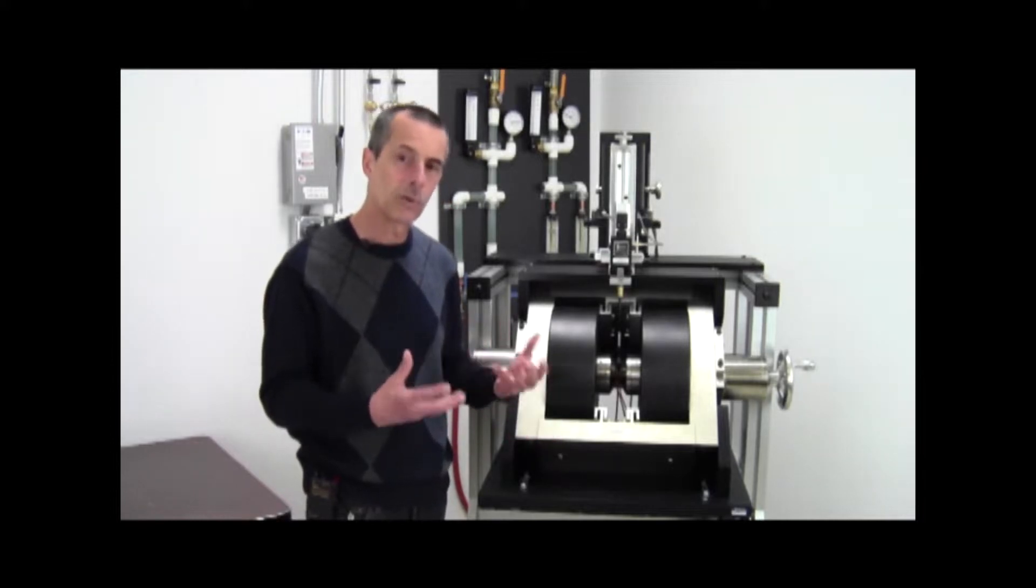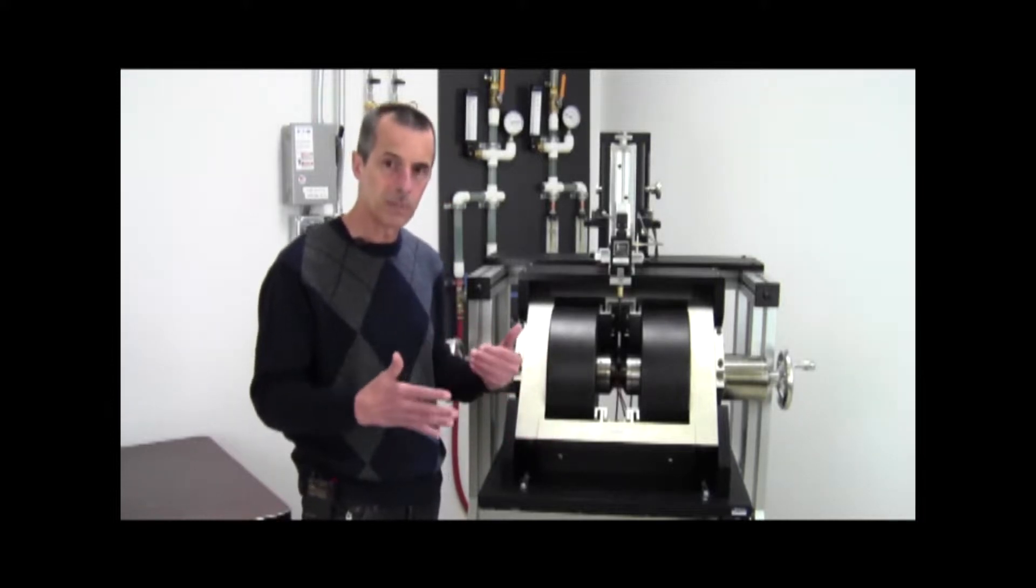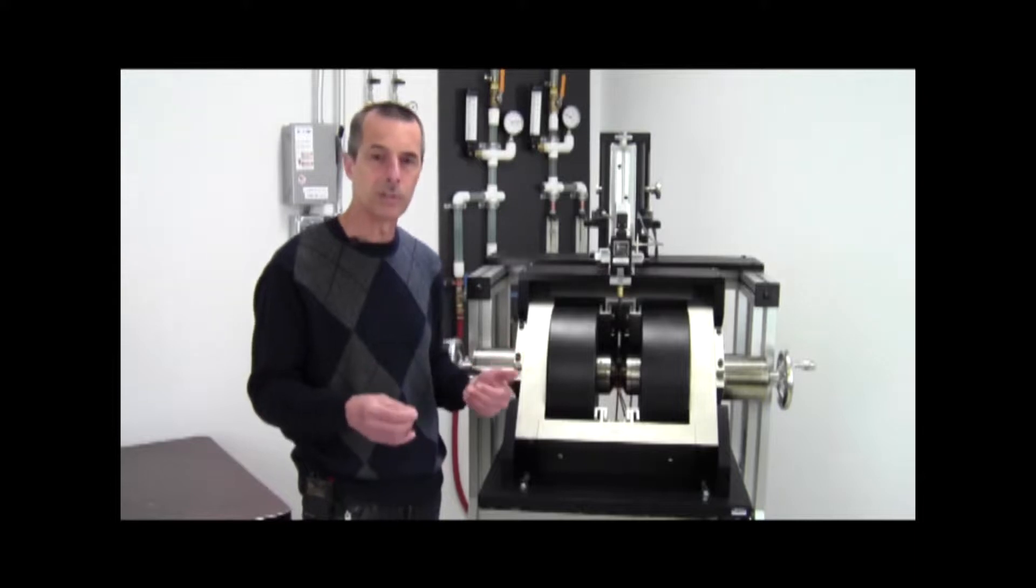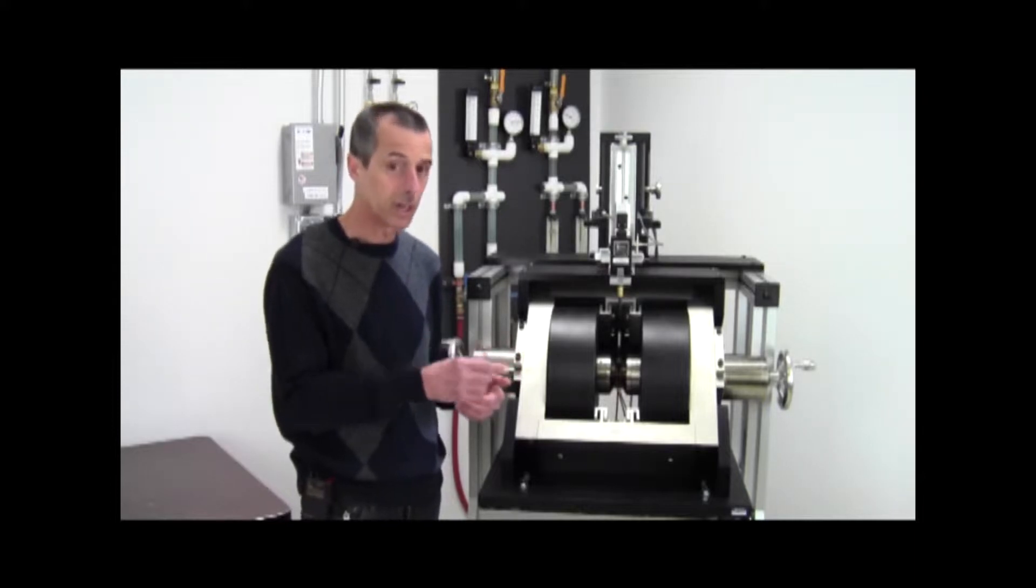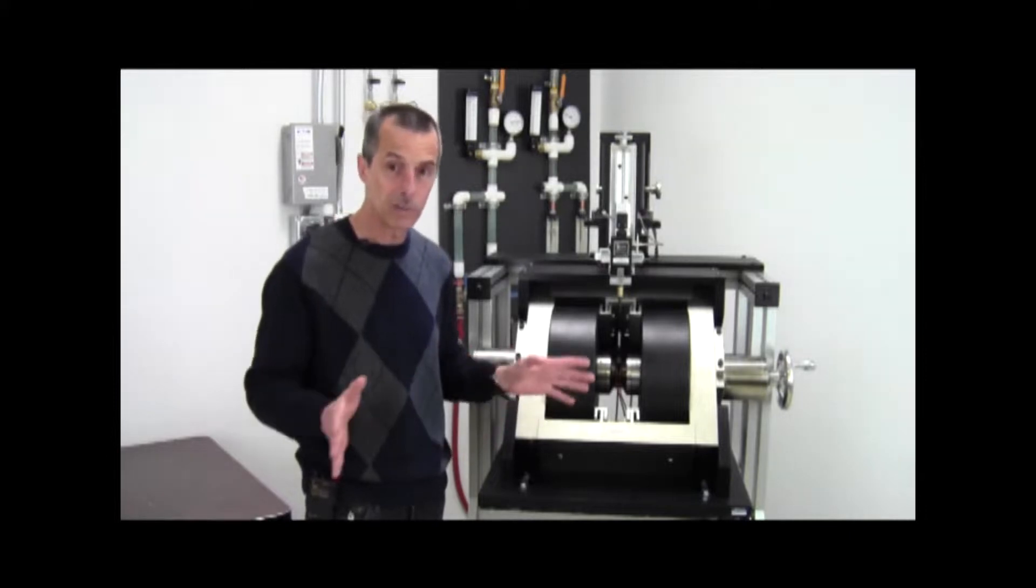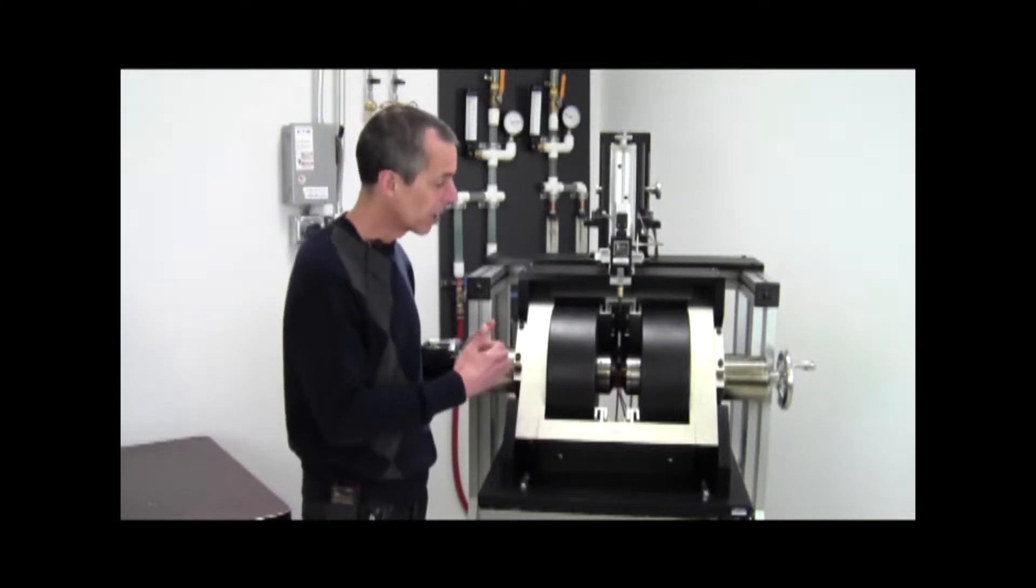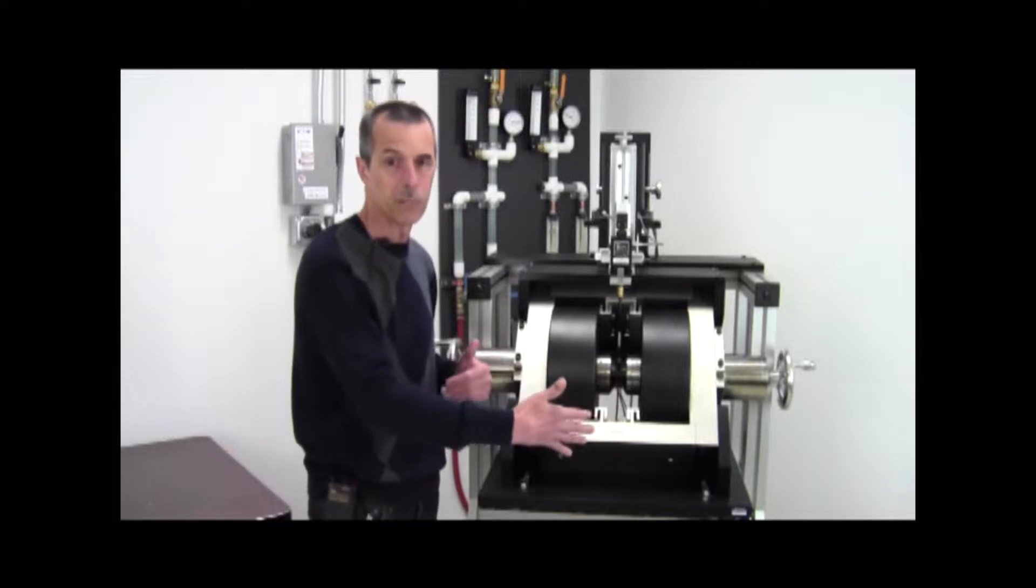And because of field ramping algorithms that have been implemented in combination with the ability to record data at very short time constants, as low as 10 milliseconds, one can acquire data very quickly. In fact, one can acquire a full hysteresis loop over the full field range of the magnetometer in as little as seconds.